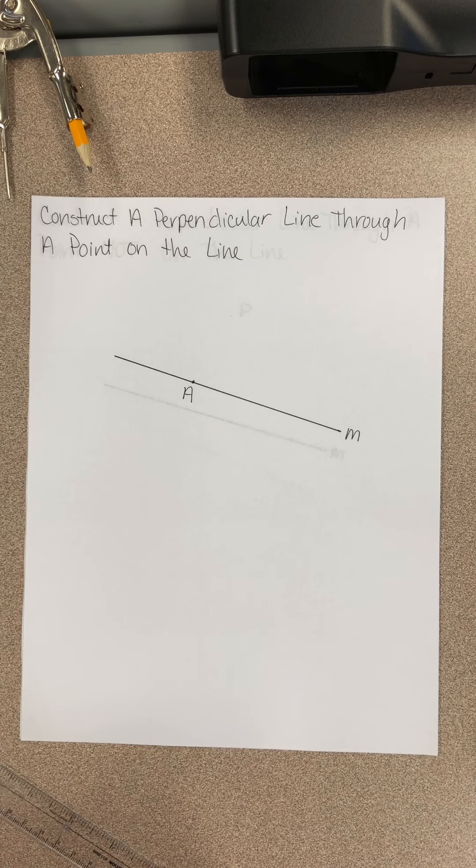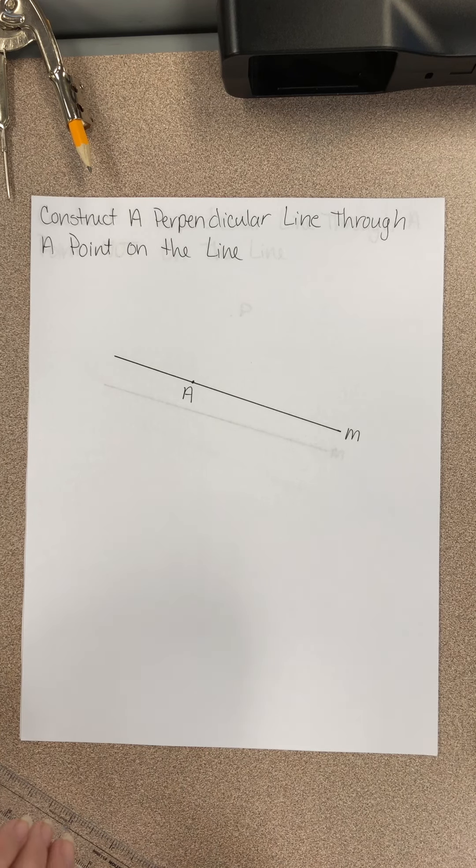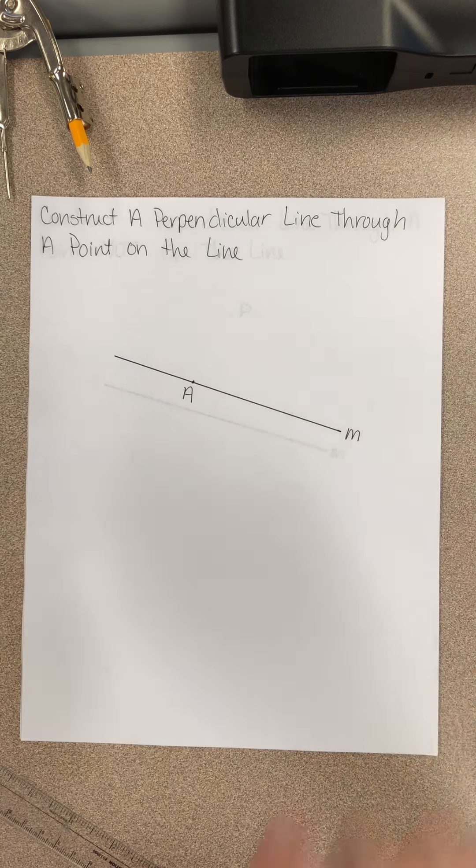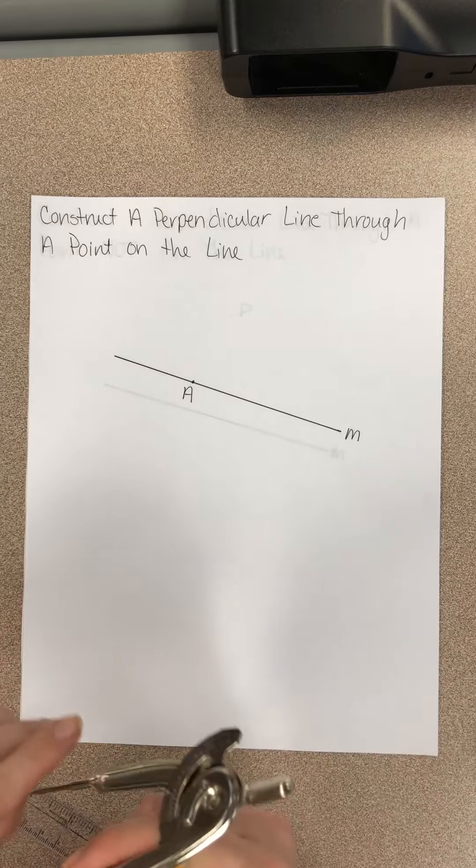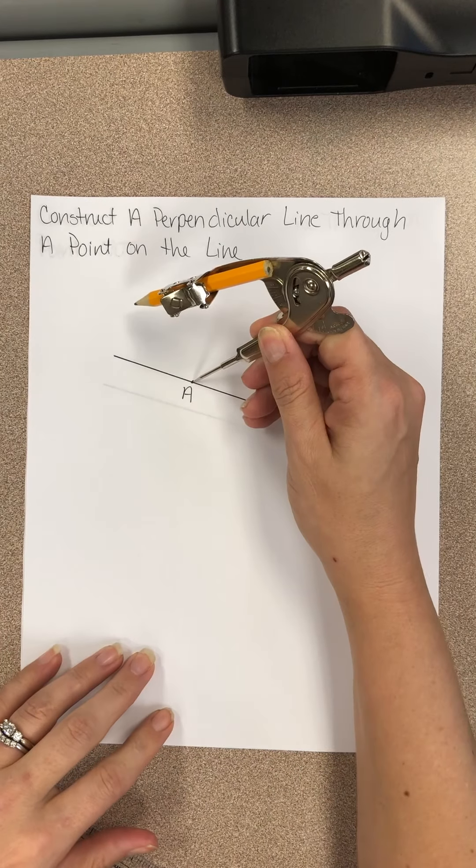Now I'm going to teach you to construct a perpendicular line through a point on the line. When you read your directions, it says to place the needle of the compass on point A. So I'm going to put it on point A.